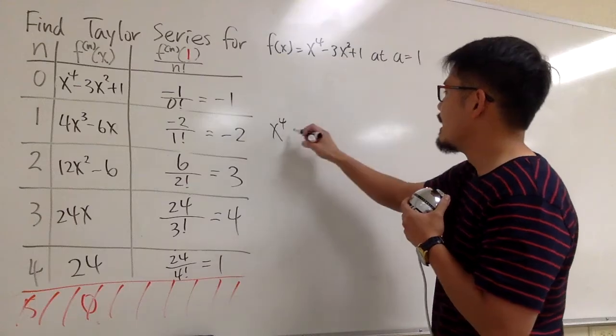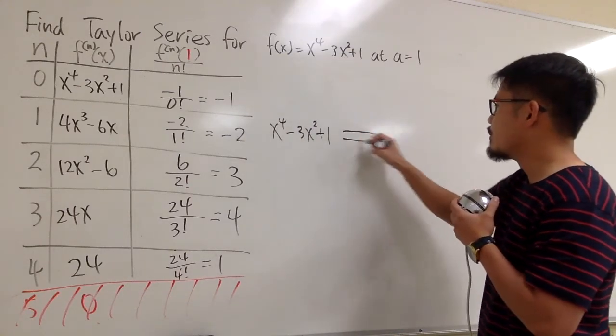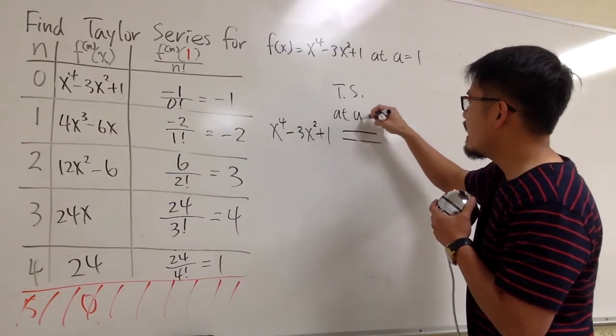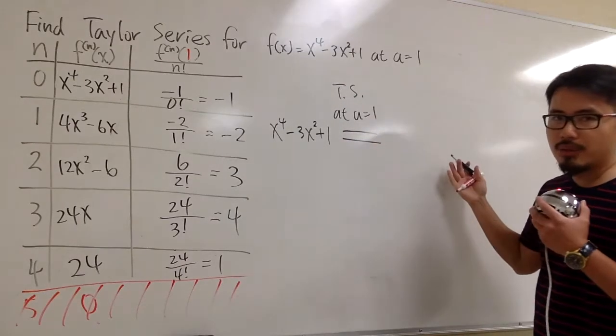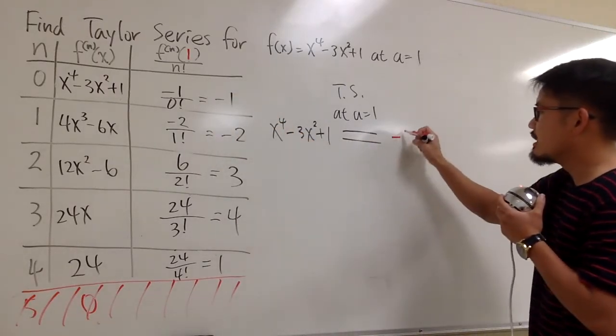x to the 4th power minus 3x squared plus 1. Let me tell you the Taylor series expansion at a is equal to 1. It's the following. We first put down the constant term, which is negative 1.